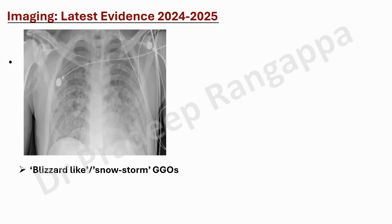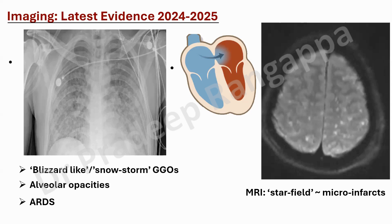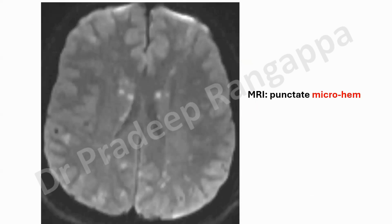For imaging, chest X-ray typically shows a snowstorm or blizzard-like ground-glass opacities, and patients can manifest alveolar infiltrates consistent with ARDS. Echocardiography is very important — one must look for patent foramen ovale, atrial septal defect, and RV strain. We performed an echocardiogram for our patient to look for PFO or ASD, which was absent. MRI, especially with neurological obtundation, shows a star-studded pattern of microinfarcts along with punctate microhemorrhages, which are typical of fat embolism.